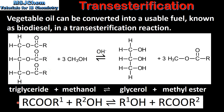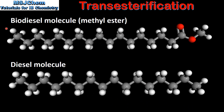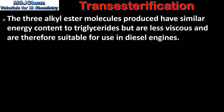Here we have the general equation for the reaction. Next we will compare a biodiesel molecule with a diesel molecule. As you can see, they are both quite similar, each consisting of about 16 carbon atoms. However, the biodiesel molecule has an ester group which is bonded to a methyl group, hence the name methyl ester. The three alkyl ester molecules produced have similar energy content to triglycerides but are less viscous and are therefore suitable for use in diesel engines.